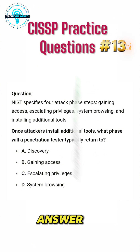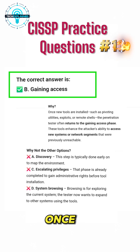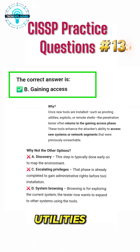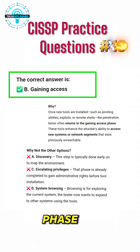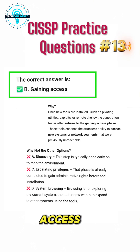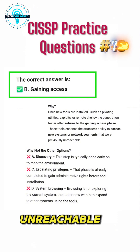The correct answer is B. Gaining access. Why? Once new tools are installed, such as pivoting utilities, exploits, or remote shells, the penetration tester often returns to the gaining access phase. These tools enhance the attacker's ability to access new systems or network segments that were previously unreachable.